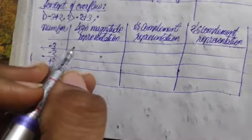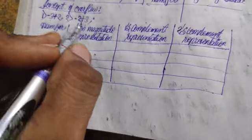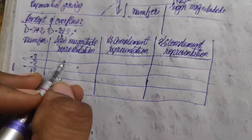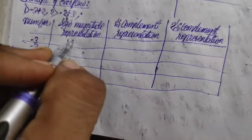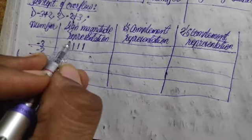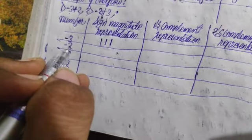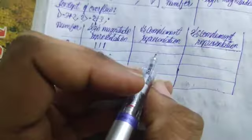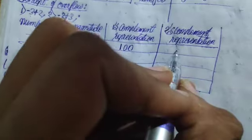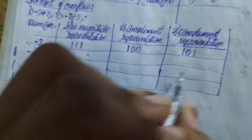Now for minus three, the sign magnitude representation is going to be one one one. This MSB is going to be one because of the negative sign. Coming to one's complement, it is going to be one zero zero. And the two's complement will be one zero one.